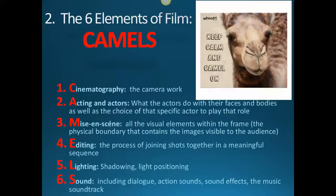The six elements of film are called CAMELS. C stands for cinematography, which is all your camera work — things like camera angles, filters, pans, and camera movements. Anything to do with the camera.